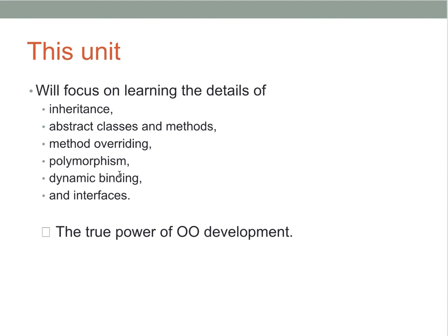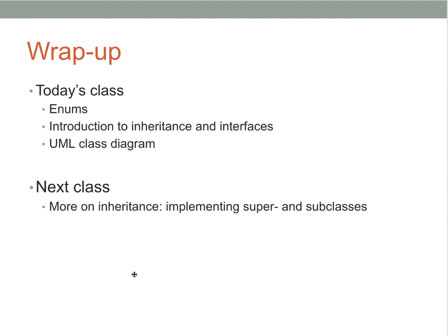All of this was an introduction to higher-level object-oriented concepts of inheritance and interfaces. The rest of this unit will focus on inheritance, abstract classes and methods, method overriding, polymorphism, dynamic binding, and interfaces — these are what really let us bring out the power of object-oriented development. Today's class covered enums in some depth and introduced inheritance, interfaces, and class diagrams. Next time, you'll hear more about inheritance, in particular how to implement super and subclasses. If you have questions, let me or your instructor know.